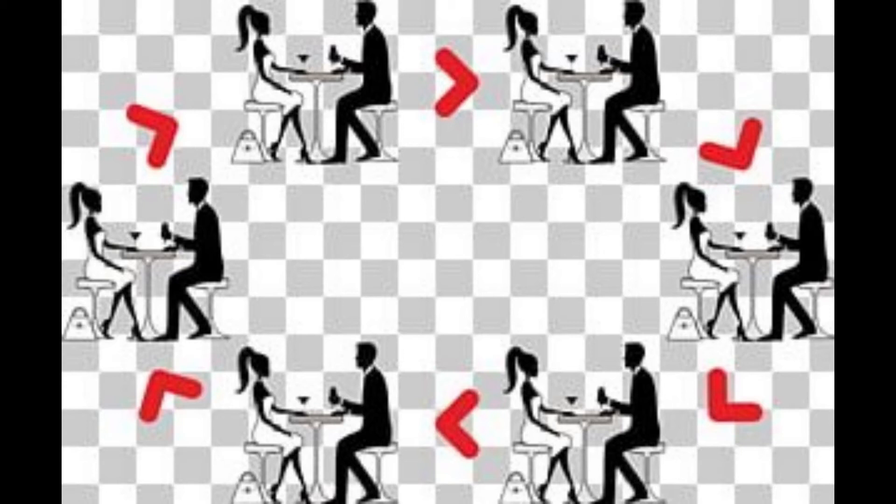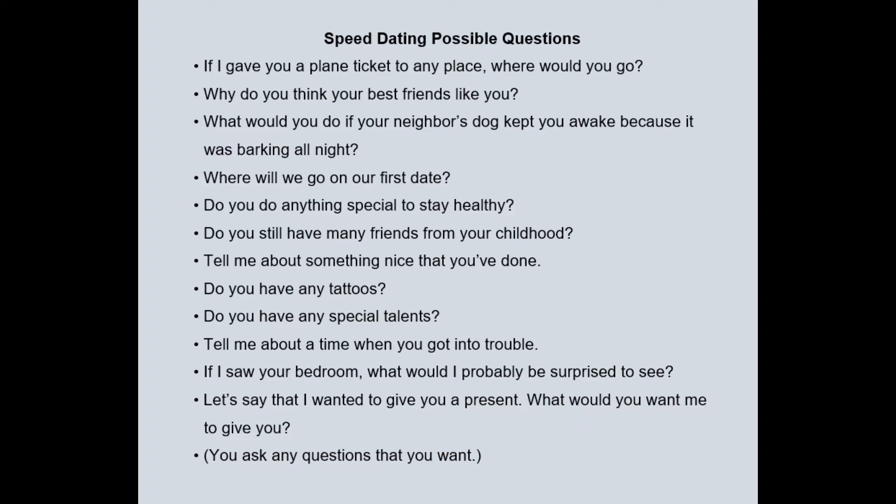So what kind of questions do they ask? Well, to make it more interesting and creative, it's best if they don't just ask biographical questions like, what's your job or do you have any kids? So I like to give them a list of questions that they can choose from, but I also tell them that they can ask their own questions too. Here are some sample questions I've used. For example: if I gave you a plane ticket to any place, where would you go? Or, why do you think your best friends like you? Another one: what would you do if your neighbor's dog kept you awake because it was barking all night? In the notes below, I'll give a link where you can find these questions. Also, notice at the end of the list I include a place where they can ask their own questions. I make sure they understand they can choose any of these questions and ask them in any order they want.